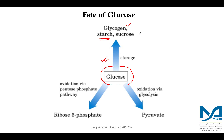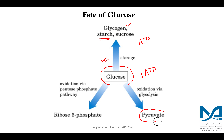If there is no need for ATP production and we have excess ATP, glucose will be converted to glycogen. If we require ATP — that is, if we have low levels of ATP — glucose will be metabolized to pyruvate. The process by which glucose is converted to pyruvate is an oxidation process, and this metabolic pathway is designated as glycolysis.